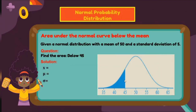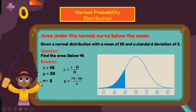For the solution, consider the values for X, mean, and standard deviation. The value of X is equal to 45 since we are looking for the area below 45. The mean is equal to 50 and the standard deviation is equal to 5. Use the formula to convert 45 as a z-score: z equals X minus mean divided by the standard deviation. So z equals 45 minus 50 over 5. That is negative 5 divided by 5, so z equals negative 1.00.